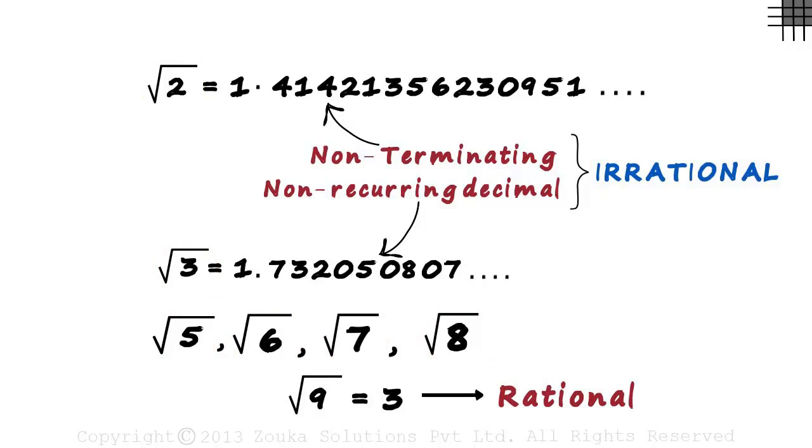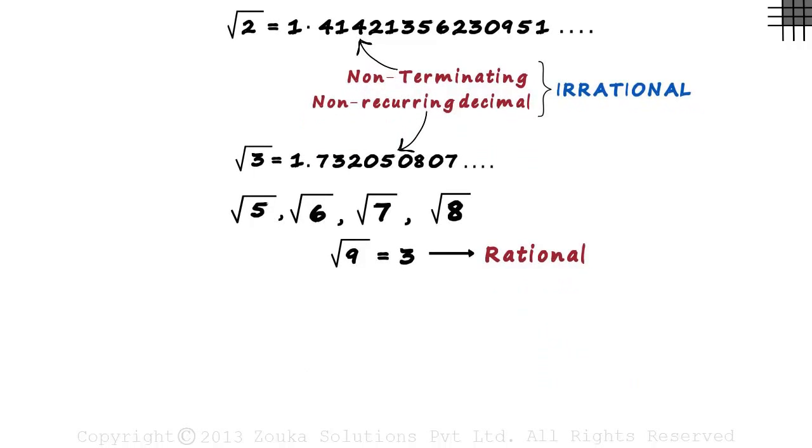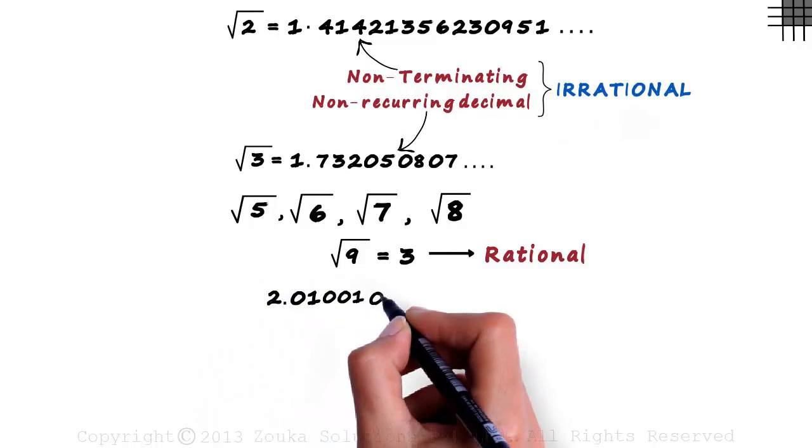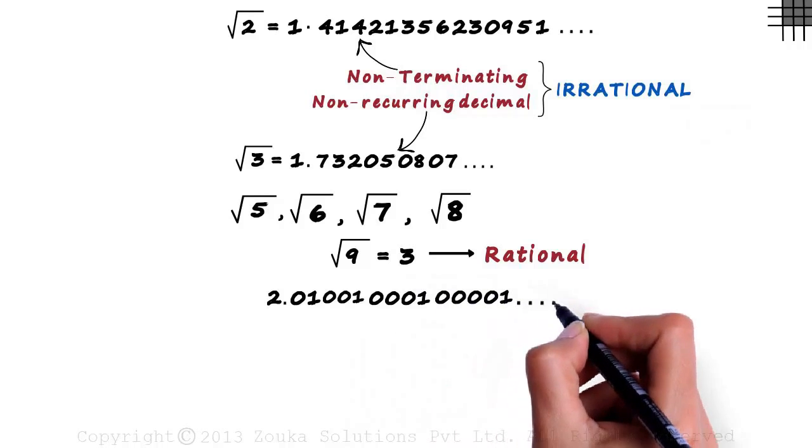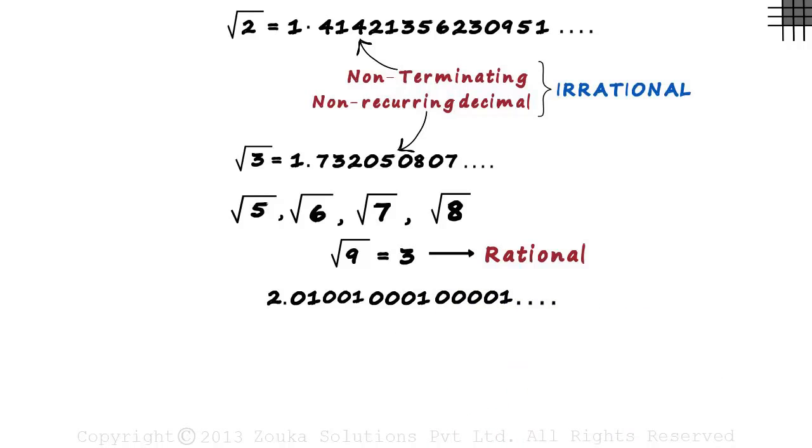Here's the interesting part. If you know these two points well, you can even form an irrational number by yourself. Let's see how. We have to form a number which does not end and does not repeat any pattern. Something like 2.01001001001001001 and so on. Here the number does not end and is also non-recurring.